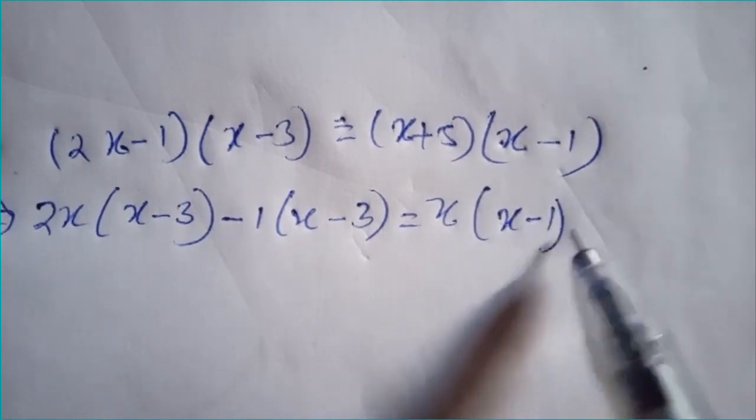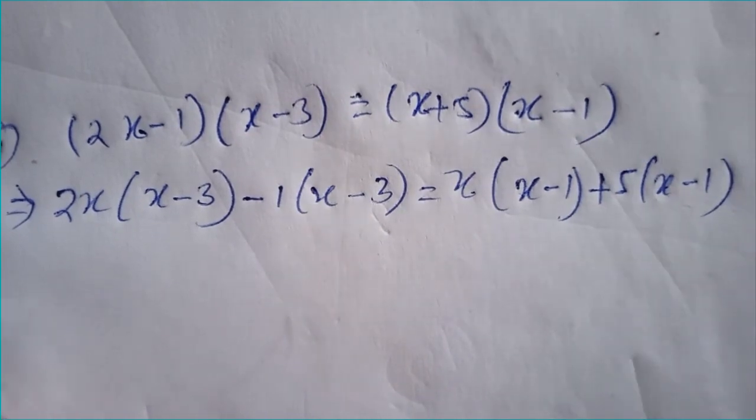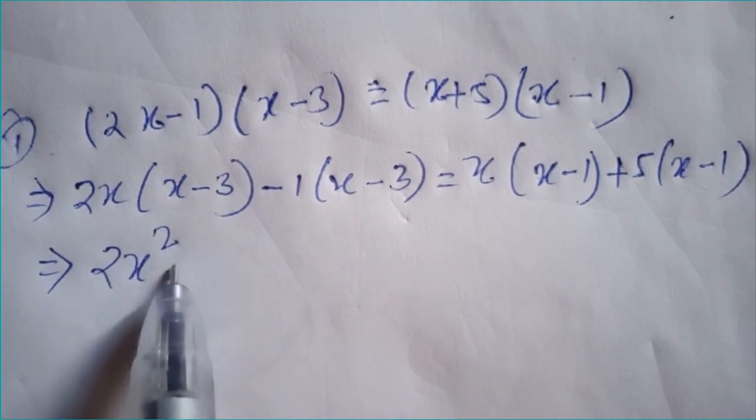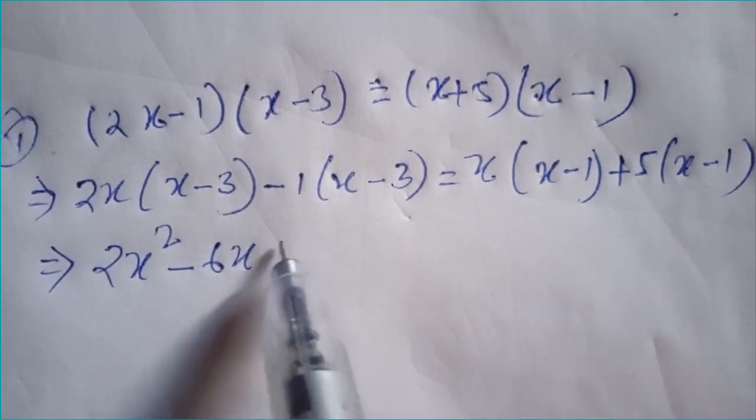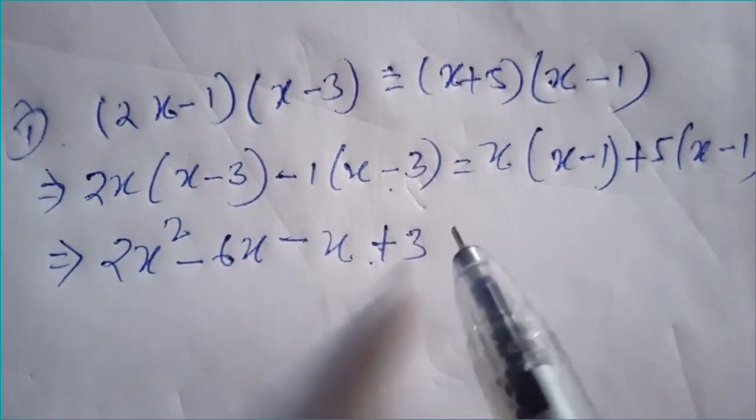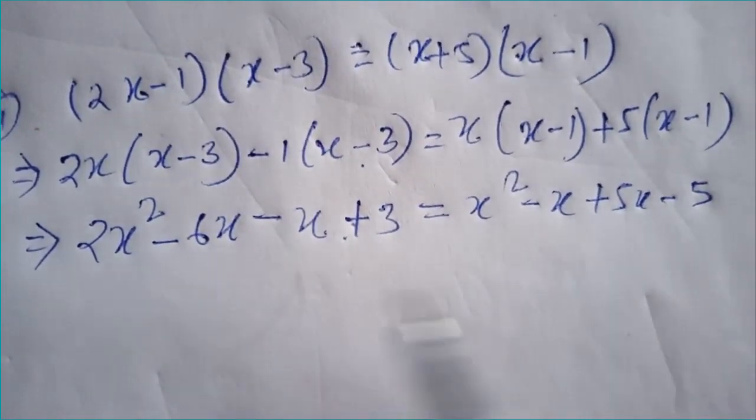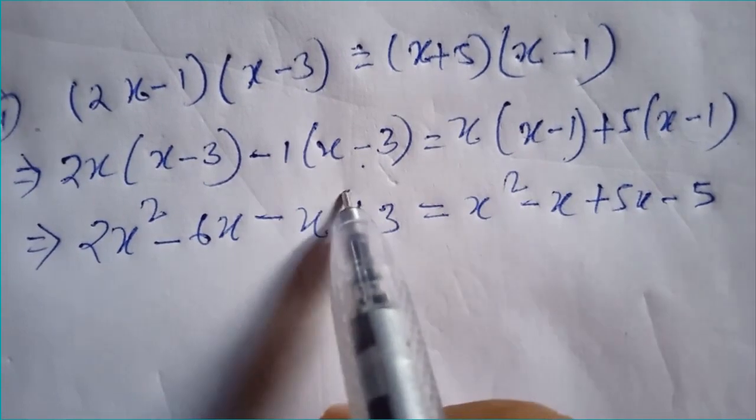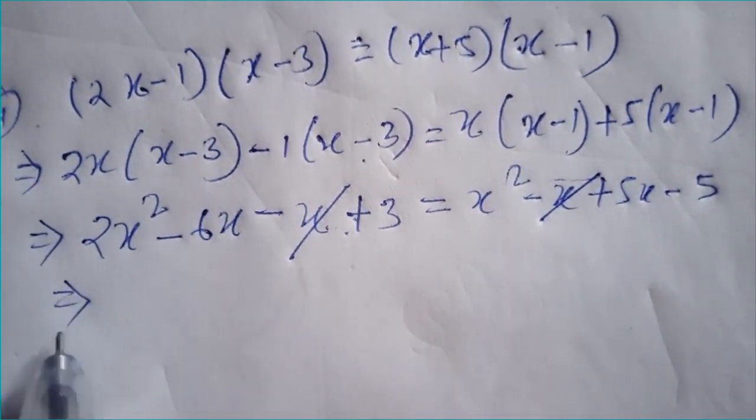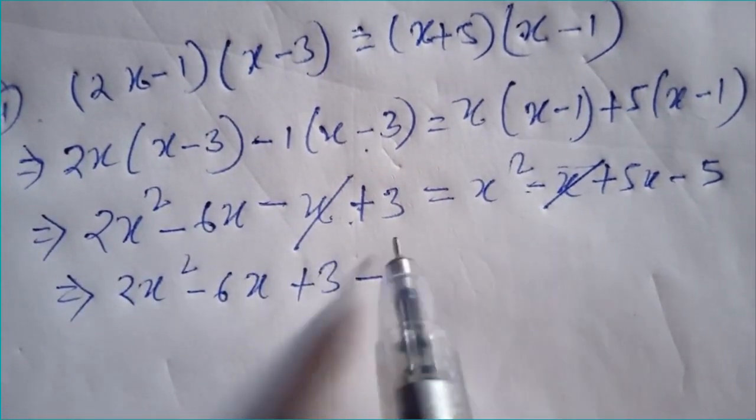On the right side we have (x - 1) times x plus (x - 1) times 5. Expanding, we get 2x squared minus 6x minus x plus 3 on the left. On the right side, we get x squared minus x plus 5x minus 5.